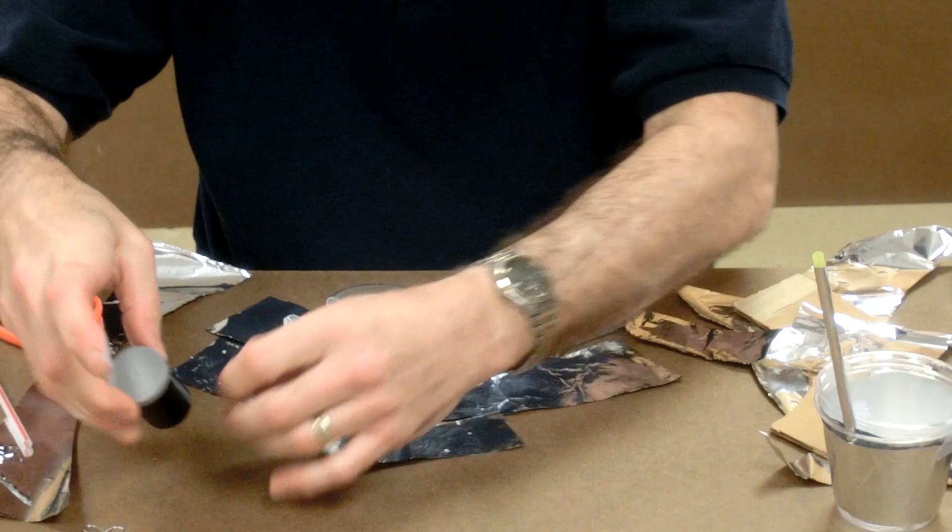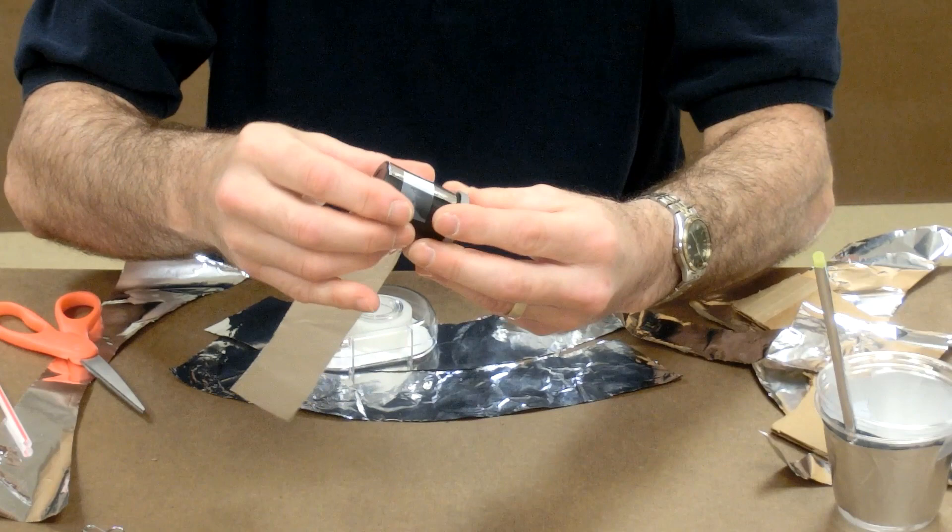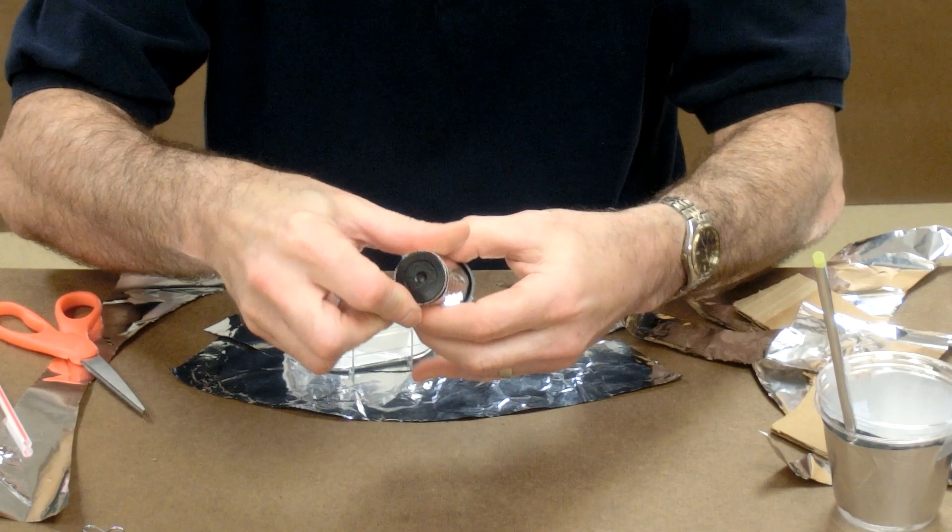So I'm going to take a little bit of tape, I'm going to tape my foil down, wrap it around the film canister, and put another small piece of tape to secure it.